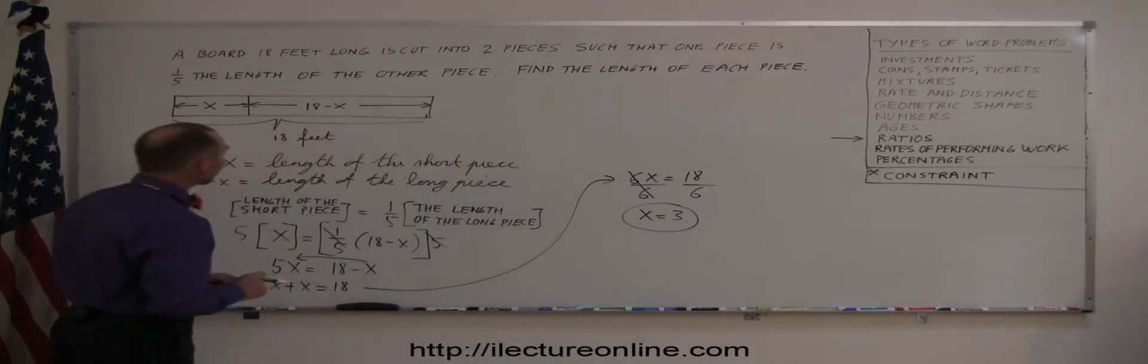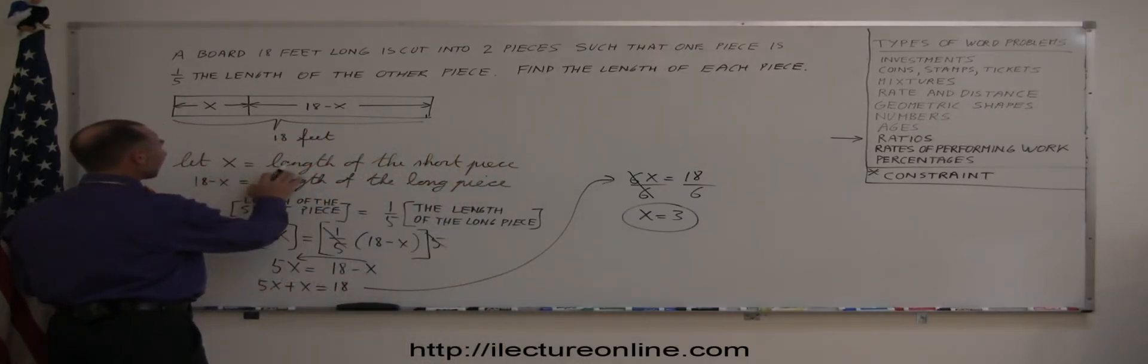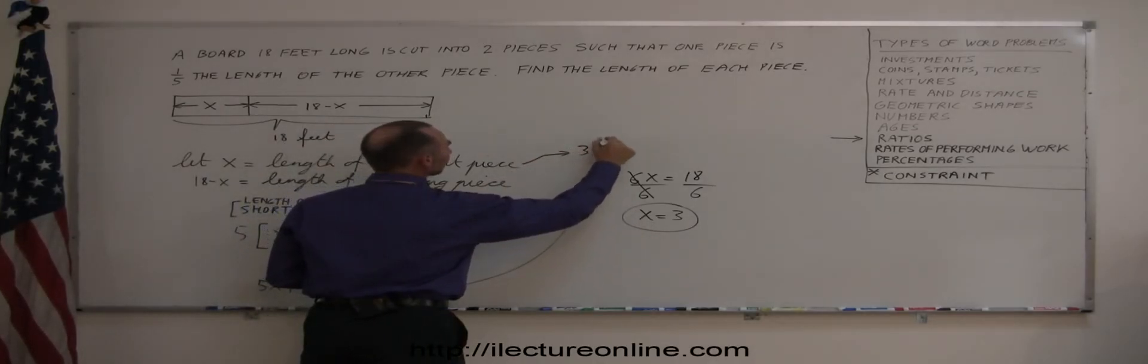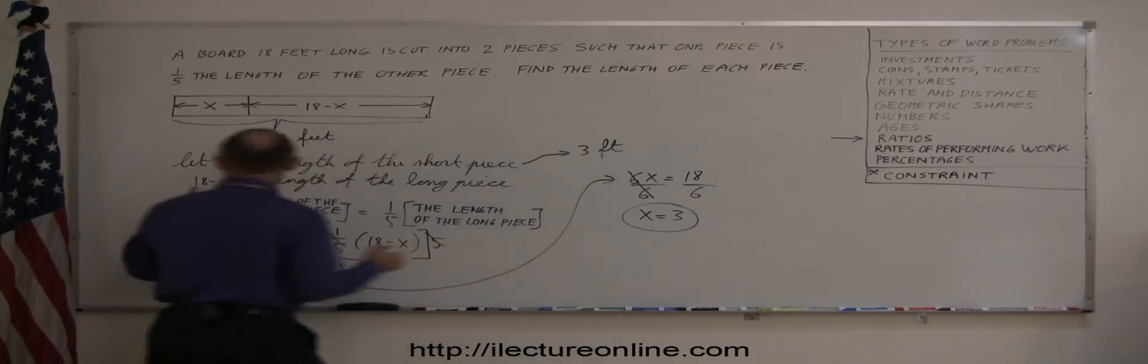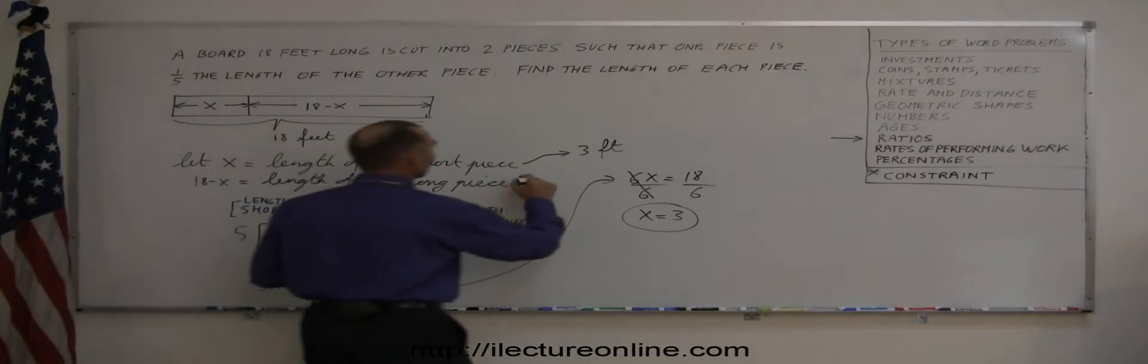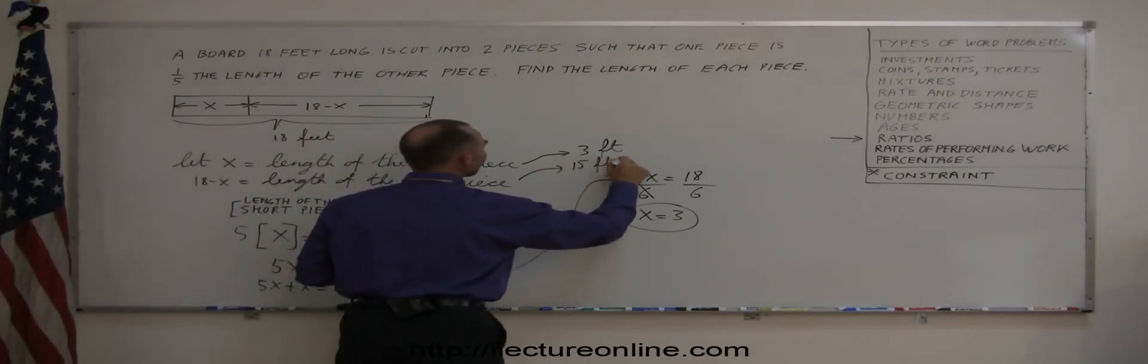Going back to our definition, since x represented the length of the short piece, that means the short piece was 3 feet long, and 18 minus x, well since x is 3, 18 minus x is 15, so 15 feet should be the length of the long piece.